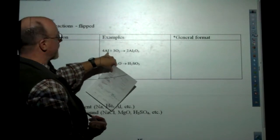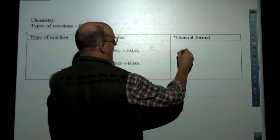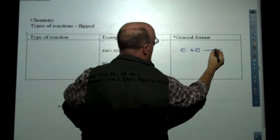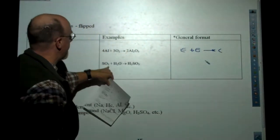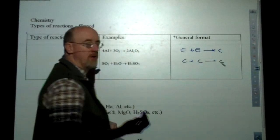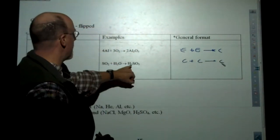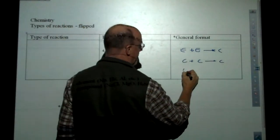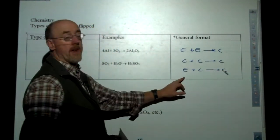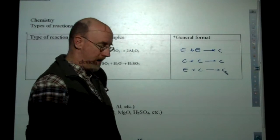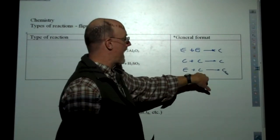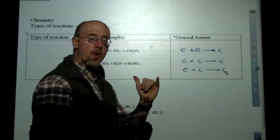Looking at the first type of reaction: you have an element plus an element reacting to yield a compound. On another variation, you have a compound plus a compound yielding a compound. We could also have an element plus a compound going to a compound, or a compound plus an element. The order on the reactants or products side doesn't really matter, as long as they're there.